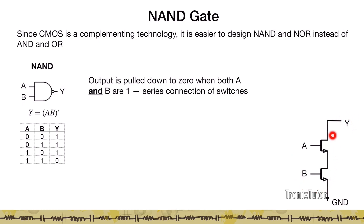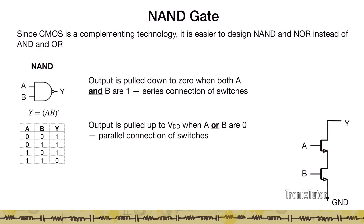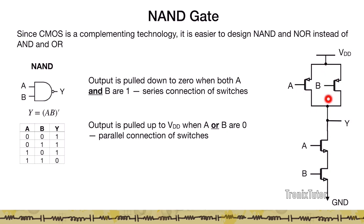The pull-down network consists of two NMOS transistors. These two NMOS transistors create a short to ground only when both A and B are one. On the other hand, the output Y goes to one when either A or B is zero — when A is zero the output must be one, and when B is zero the output must also be one. So the PMOS network is a parallel connection of A and B, which ensures the network shorts when either A or B is zero. The two-input NAND gate has two NMOS transistors in series and two PMOS transistors in parallel.